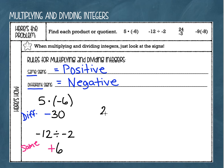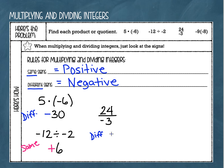My next example looks like a fraction — I've got 24 over negative 3. Well, 24 over negative 3 means division. Again, we're going to look at those signs and ask: are they the same or are they different? I've got a positive 24 and a negative 3, so these signs are different. Because the signs are different, my answer is going to be negative. Then I just do the math — 24 divided by 3 equals 8, so the answer is negative 8.